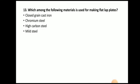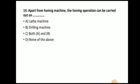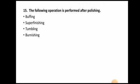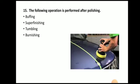Next question: which material is used for making flat lap plates? The answer is closed grain cast iron. Closed grain cast iron is used for making flat lap plates. Next question: apart from a dedicated honing machine, the honing operation can be carried out on a lathe as well as a drilling machine, because basically we want a rotary motion which we can get from either. Next question: which operation is performed after polishing? The answer is buffing.